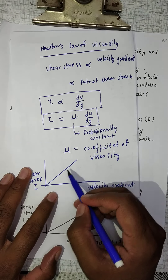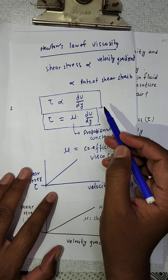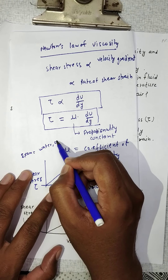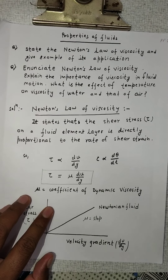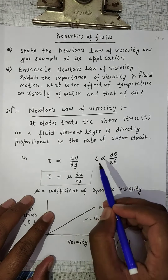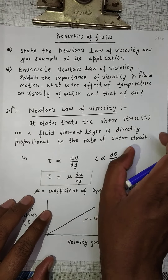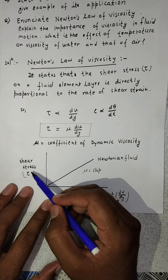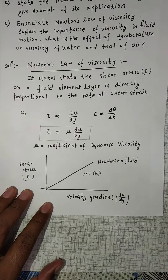Because shear stress and velocity gradient are directly proportional, the graph gives a straight line. The fluid which follows this relation is known as a Newtonian fluid. Examples include water and oil. So Newton's law of viscosity states that shear stress tau on a fluid element layer is directly proportional to the rate of shear strain, giving tau equals mu times du/dy.